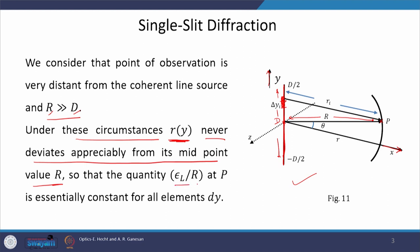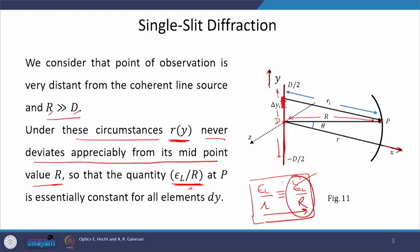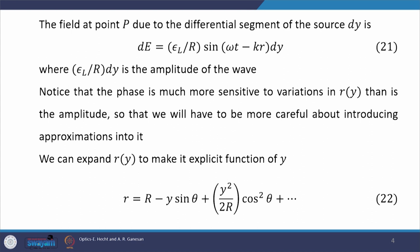Therefore, the amplitude ε_l / r becomes fixed. Under Fraunhofer approximation, we replace it with ε_r / capital R. This is the transition we are making in the Fraunhofer domain. The amplitude of the field is now constant. The expression for the field at point P due to a differential segment dy is: dE = (ε_l / R) sin(ωt − kr) dy, where the amplitude is ε_r / R · dy.